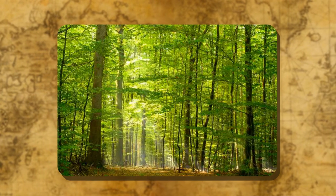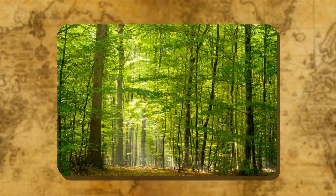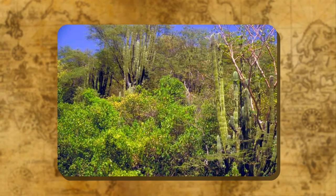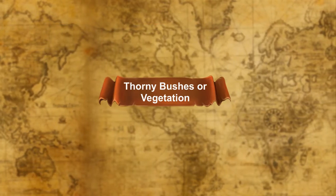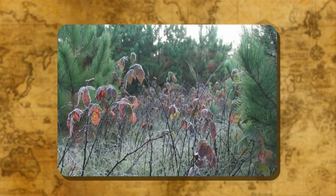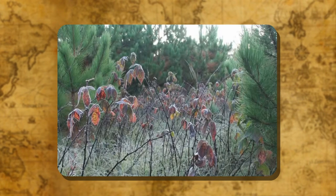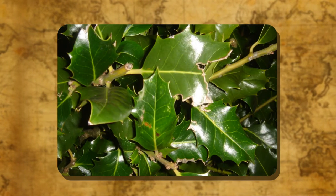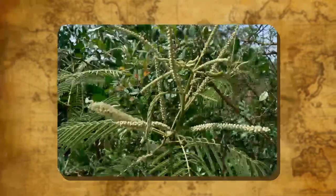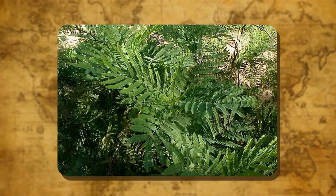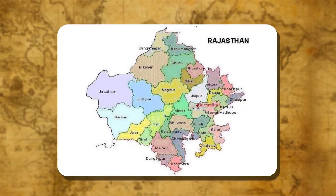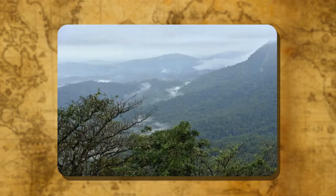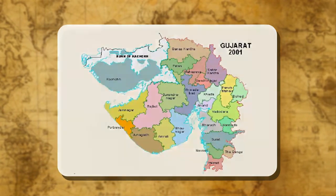The trees of deciduous forests shed their leaves during a particular time of the year. Vast areas of these forests have been cleared to get land for cultivation. Thorny bushes or vegetation: Thorny bushes or vegetation is commonly seen in the dry areas of the country. The leaves are in the form of spines to reduce the loss of water. Cactus, Kher, Babool, Kekar, etc. are important species found in the states of Rajasthan, Punjab, Haryana, eastern slopes of the Western Ghats and Gujarat.